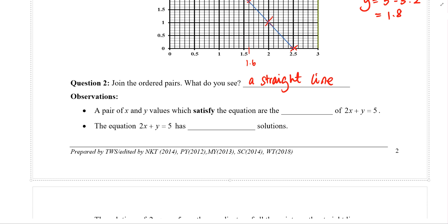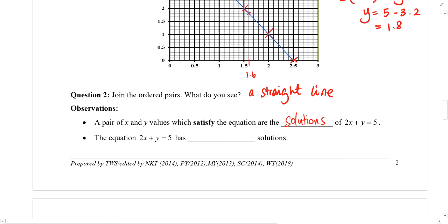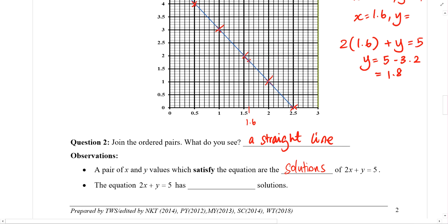So our observations. A pair of x and y values which satisfy the equations are known as the solutions of 2x plus y equals to 5. So any point on this blue line represents a pair of a set of solutions. In fact, if we plotted everything out, we'll get many, many of these crosses. How many of such crosses do you think there are? That will be the number of solutions.